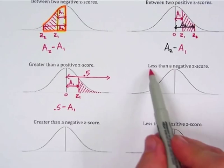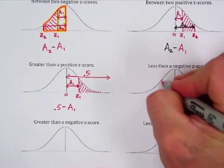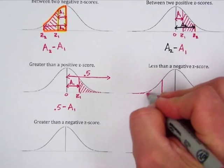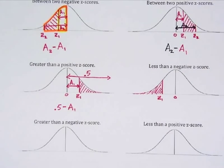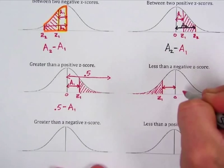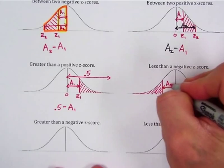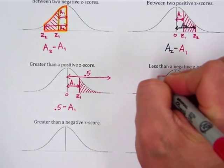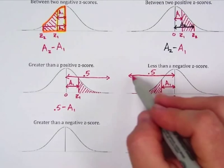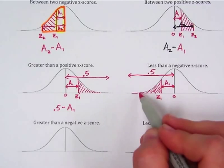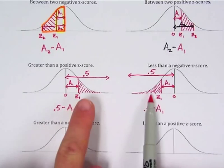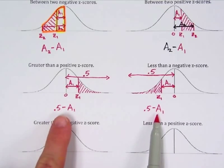Similarly, for less than a negative z-score: here's our zero and our negative z-score. We want the tail to the left. Find the area for the z-score, which gives between 0 and the z-score. Using the fact that everything to the left of the mean is 0.5, taking 0.5 − A₁ gives the area we're looking for. So in both tail cases, you go 0.5 minus the area found in the table.